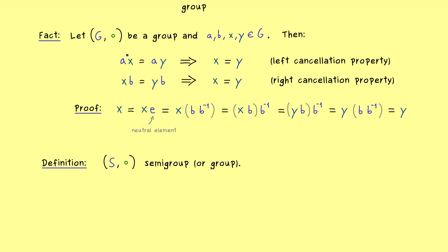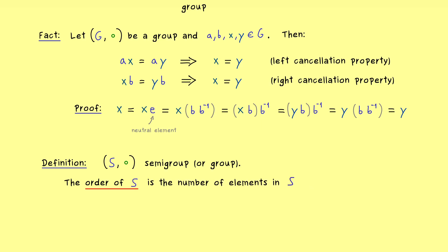When we say semi-group, we also include all possible groups as well. Often we will say we have the order of a group; however, the notion of order also makes sense for semi-groups. It is simply the number of elements in our set S. The common notation is to write ord, and this symbol is mostly only useful if we have finitely many elements. In that case one can write the cardinality of S using vertical bars or the number symbol.